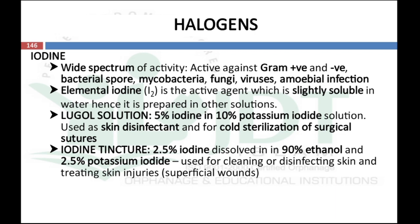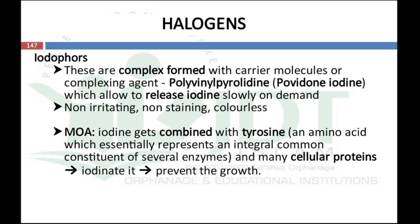Lugol's solution is 5% iodine in 10% potassium iodide solution, used as a skin disinfectant and for cold sterilization of surgical sutures. Iodine tincture is 2.5% iodine dissolved in 90% ethanol and 2.5% potassium iodide, used for cleaning or disinfecting skin and treating skin injuries. The main disadvantages of iodine solutions are that they are colored and cause staining and are irritant. To avoid this, iodine is formulated as iodophores — complexes with carrier molecules like polyvinylpyrrolidone — available as povidone-iodine solution, ointment, etc., from which iodine is released slowly on demand.